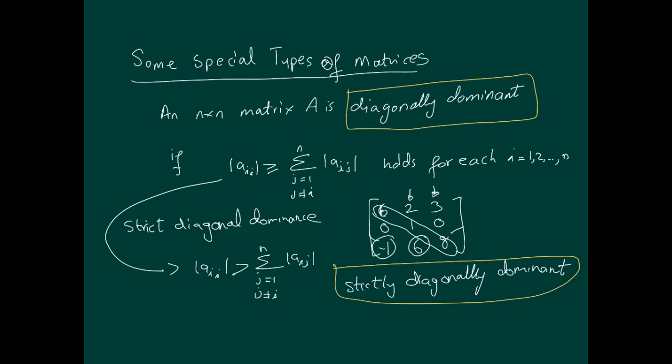So it's a strictly diagonally dominant matrix if this holds. The matrix you see here is strictly diagonally dominant because 2 and 3 is 5, which is less than 6. 0 plus 0 is less than 1. 1 and 6 is 7, also less than 8. Those are the two straightforward ones, diagonal dominance.